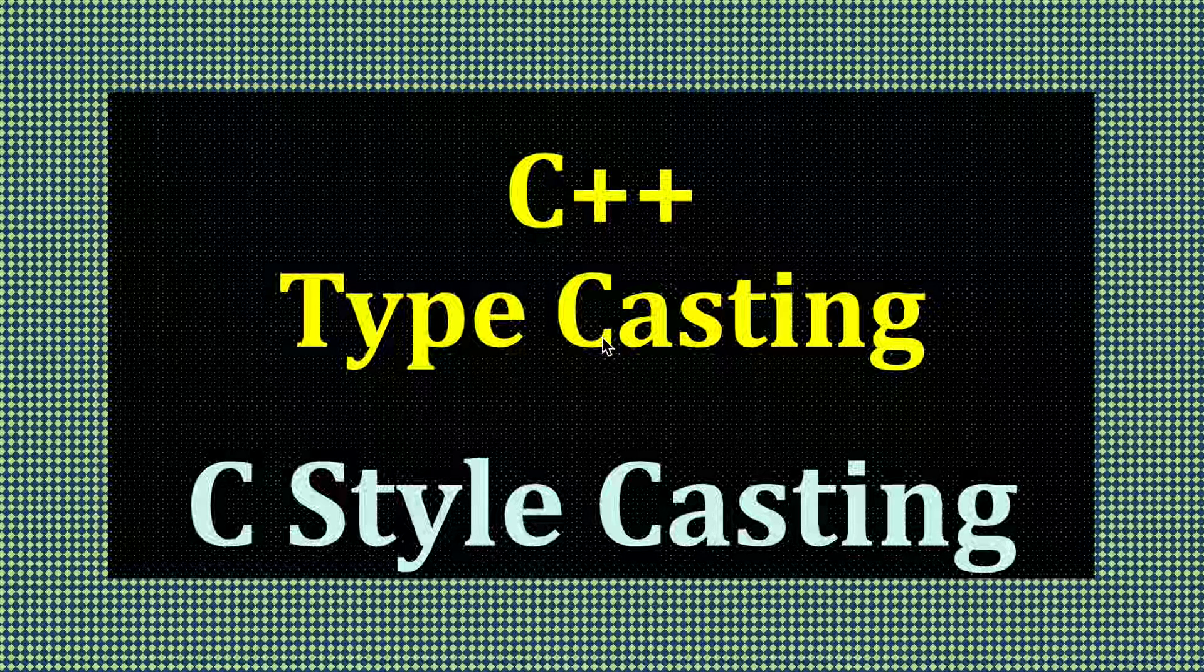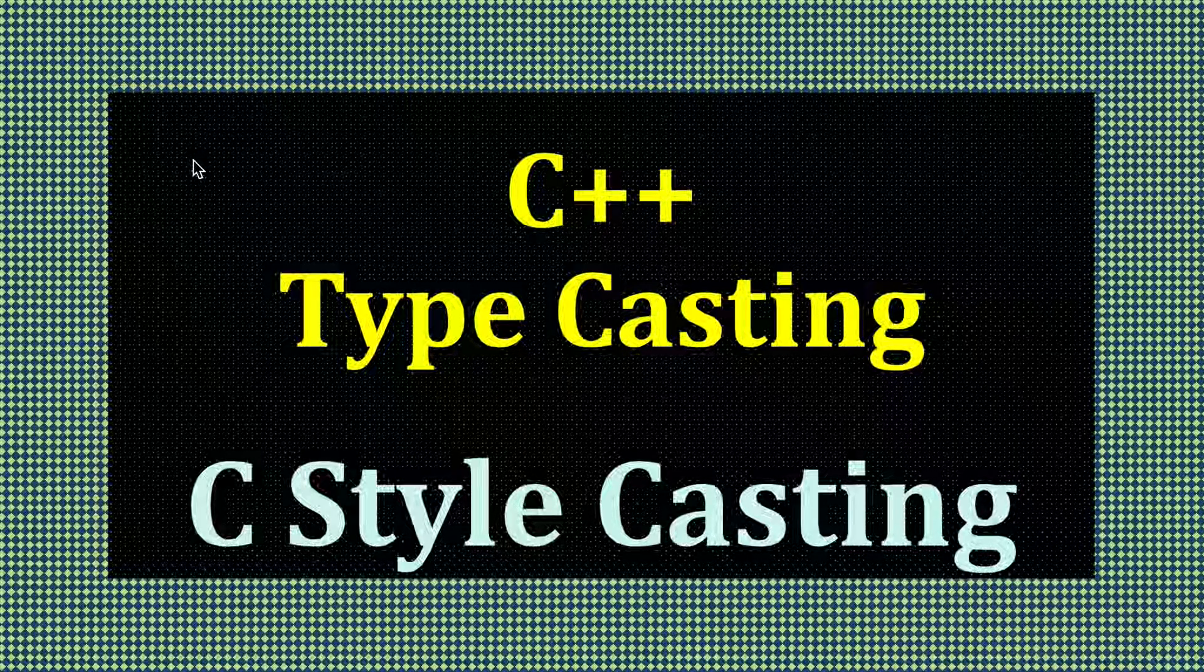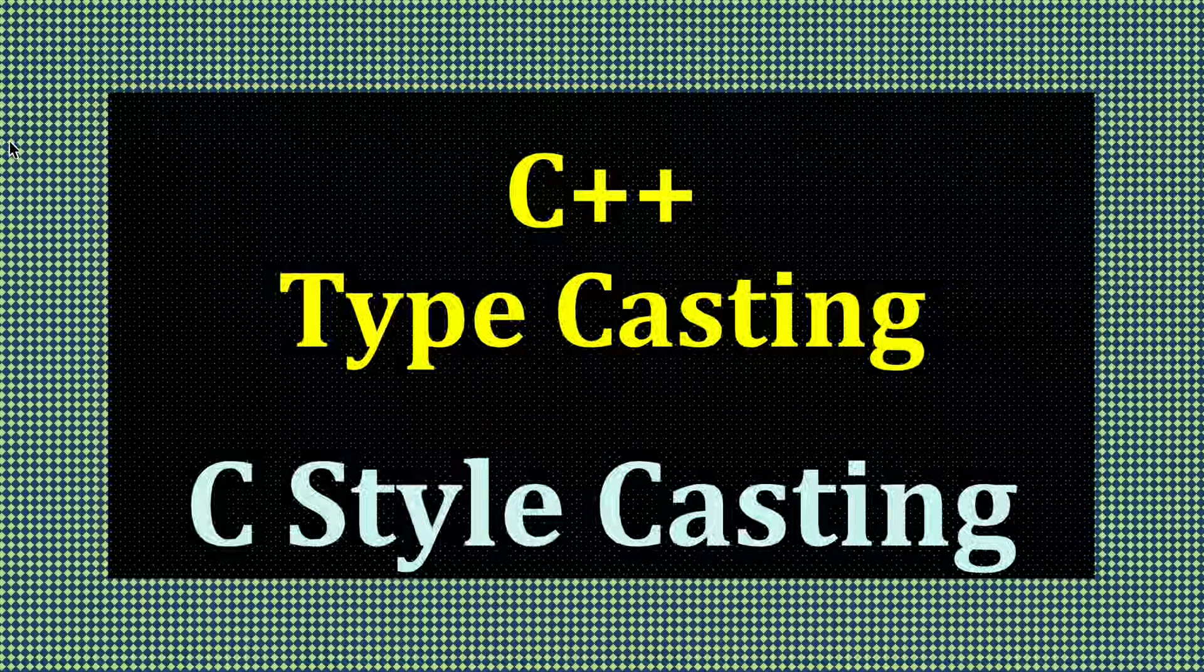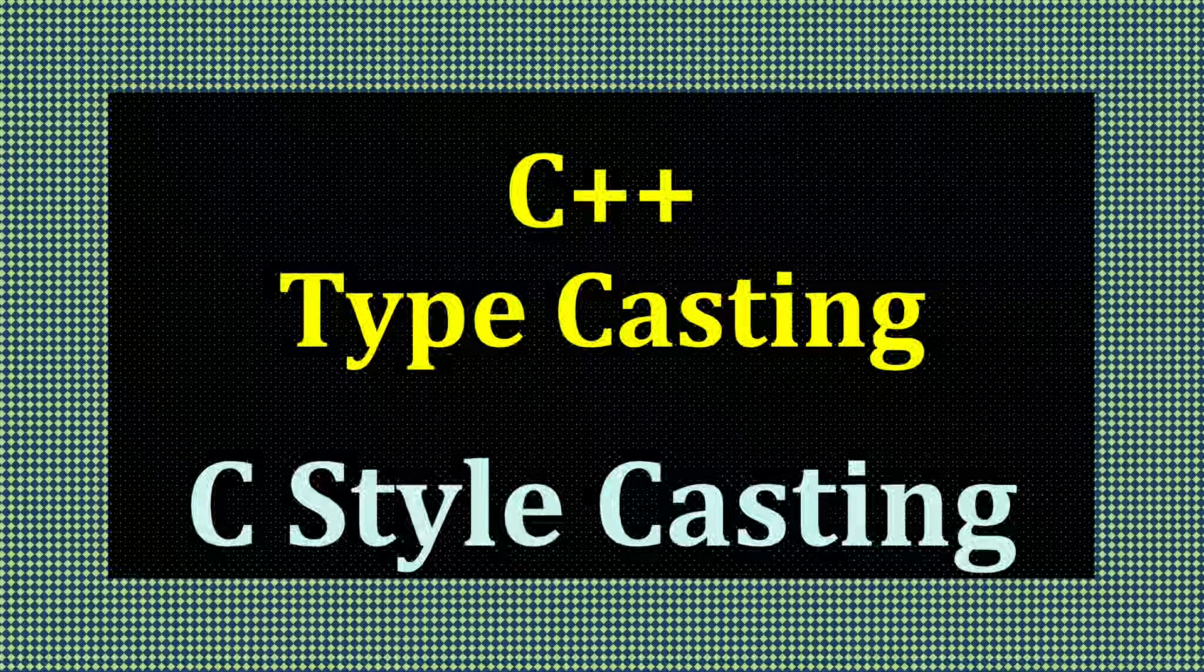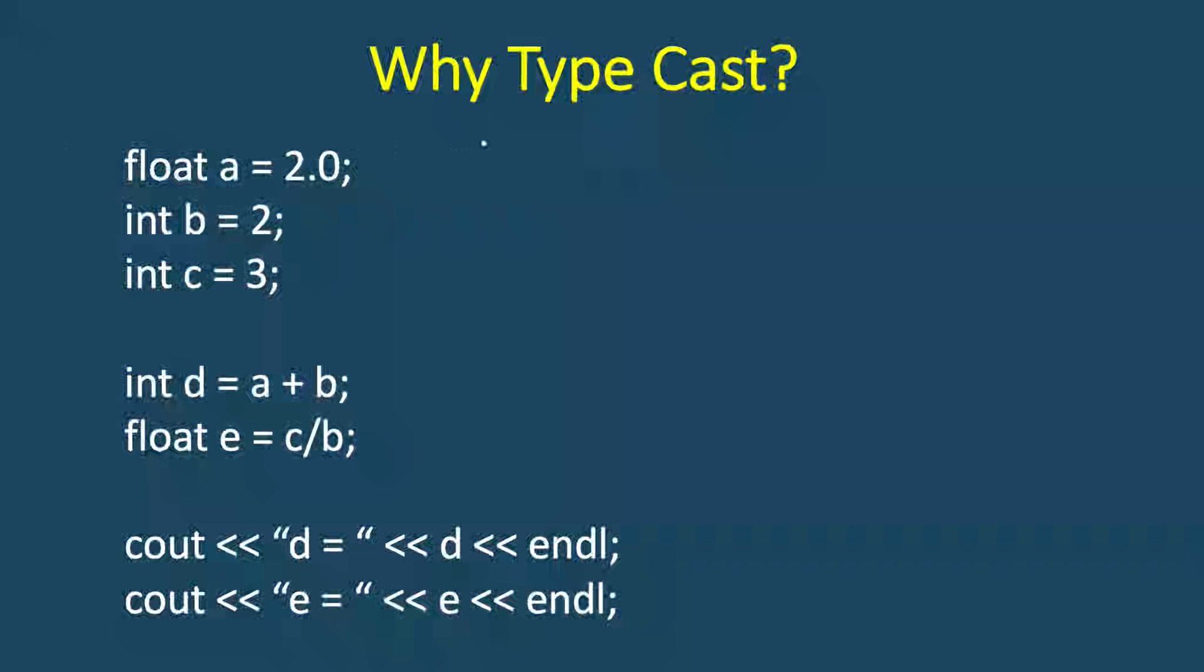And we saw that there are five different types of typecasting. The first one we call C-style typecasting that was earlier used in the C language. So first we need to understand why do we need typecast or explicit conversion. If the compiler does it for you, then why do we need it?